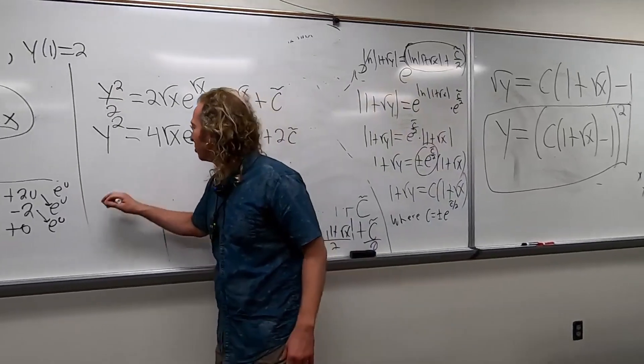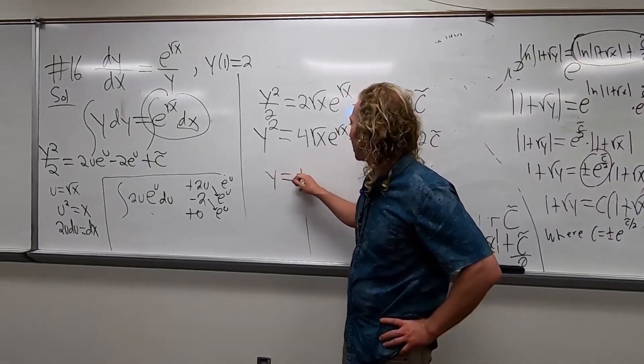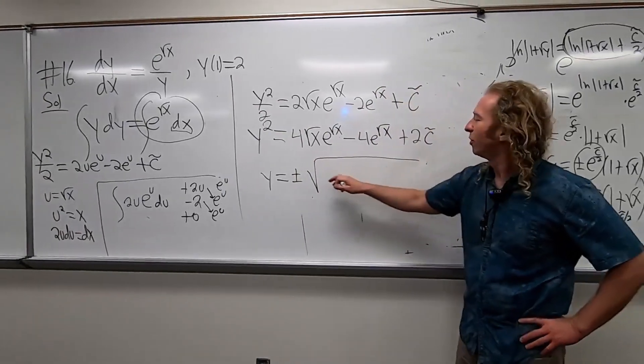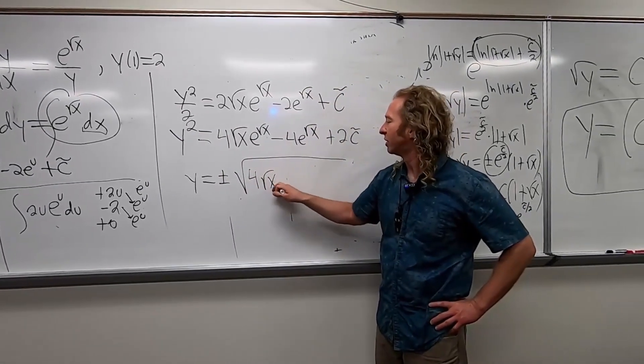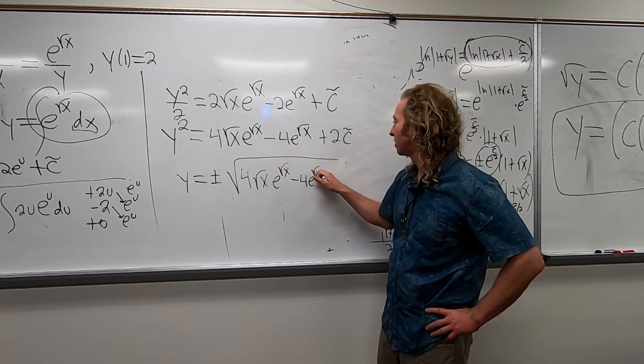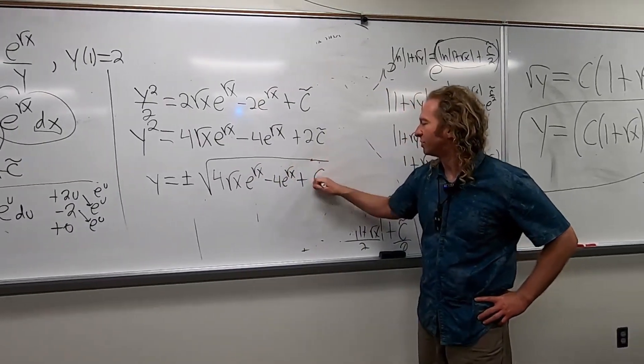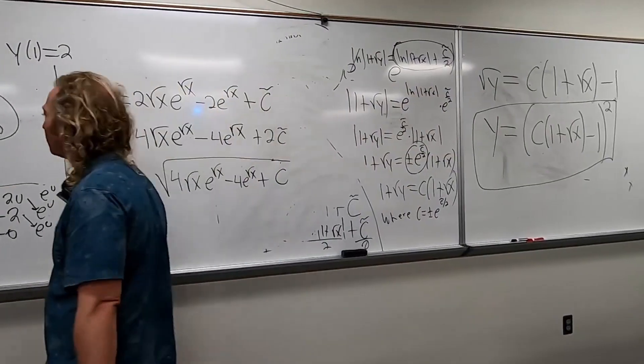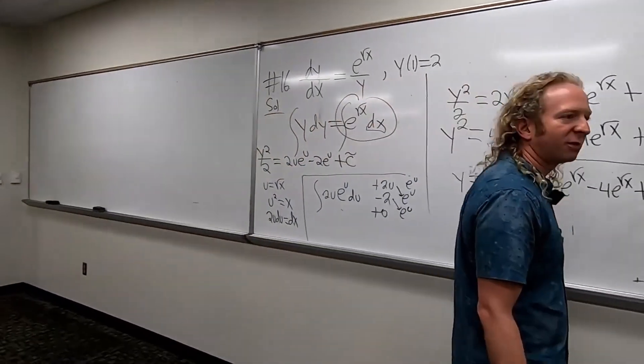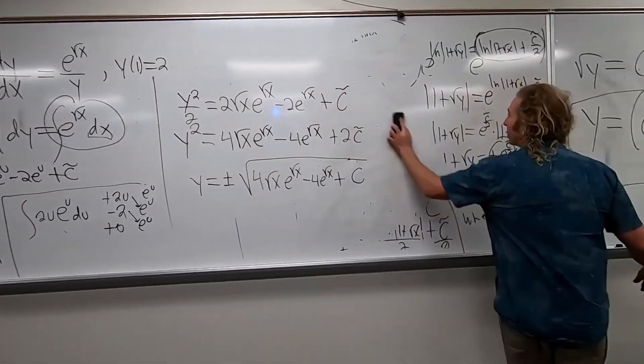Beautiful stuff. I guess we have to find C at some point. You could find it now, but I think it might be better to just go ahead and solve for y first. So maybe let's just do that. To solve for y, I guess we can multiply by two, then take the square root. So we'd have y squared equals four square root of x e to the square root of x minus four e to the square root of x plus two C tilde. Yeah, you can just call that C. Let's take the square root. So you get y equals plus or minus. When you take the square root of a variable, you get a plus or minus.